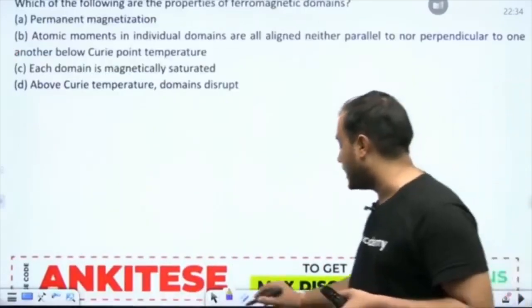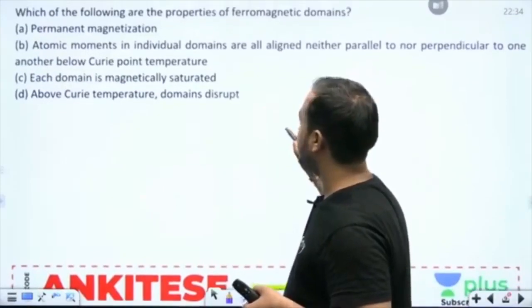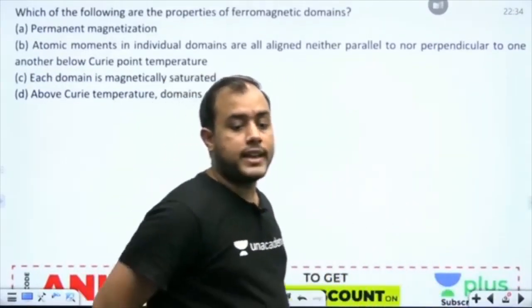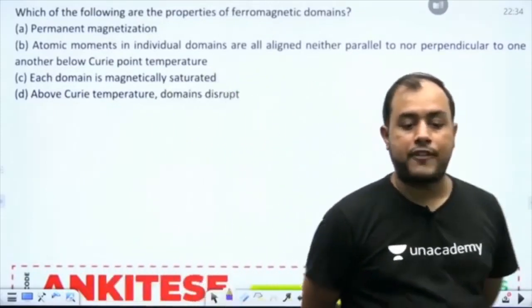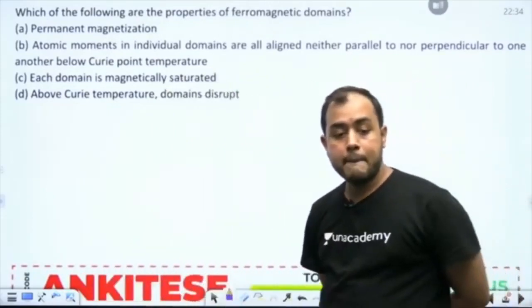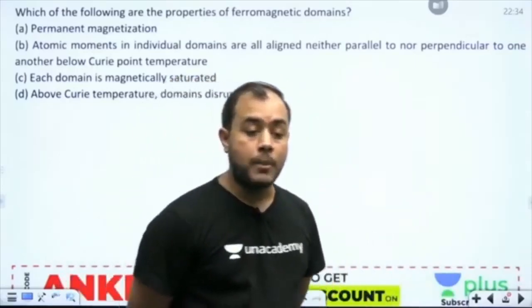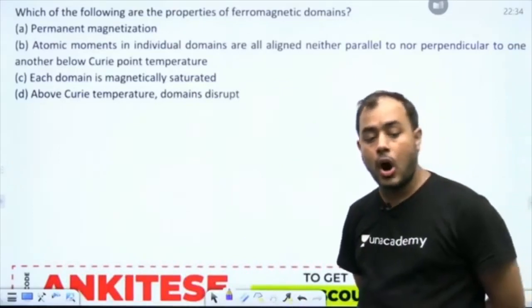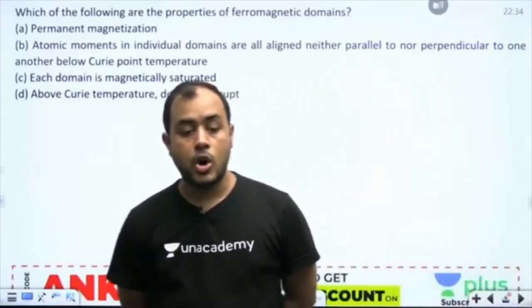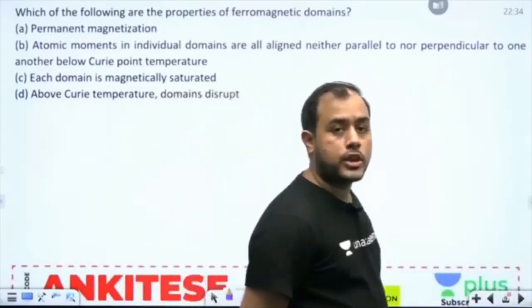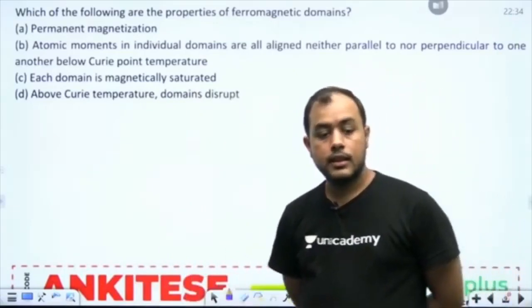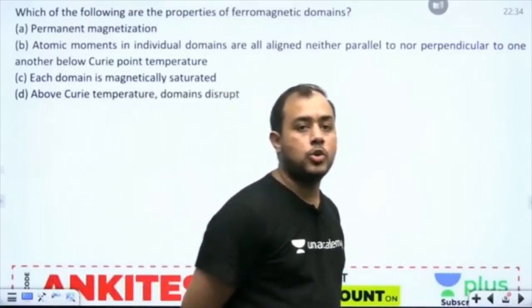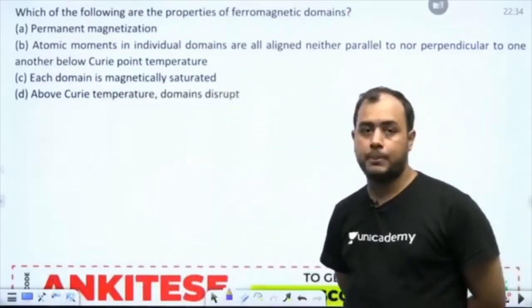Try the next one, my friends. Which of the following are the properties of ferromagnetic domain? Permanent magnetization. Atomic moments in individual domain are neither all aligned parallel to nor perpendicular to one another below Curie point. Each domain is magnetically saturated. Above Curie temperature, domains disrupt.